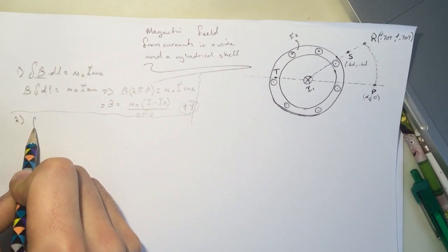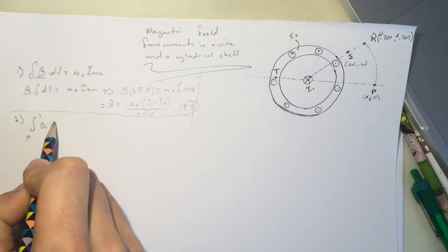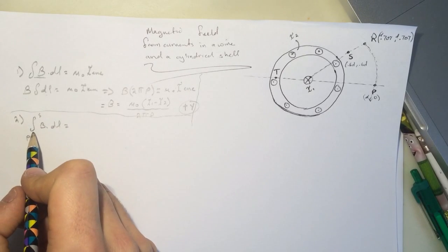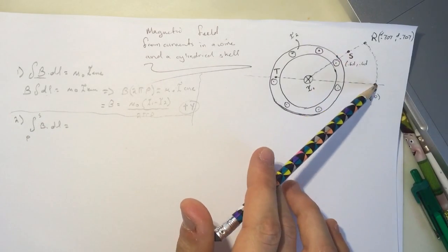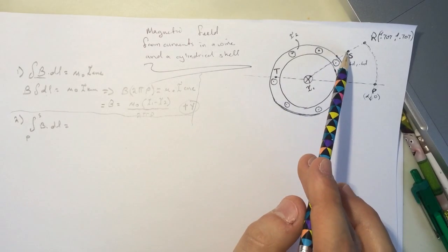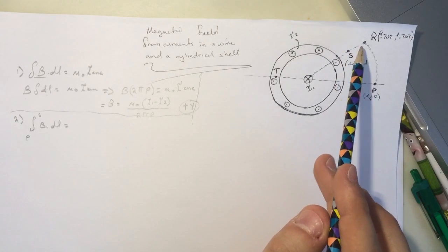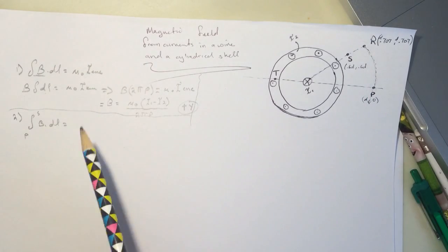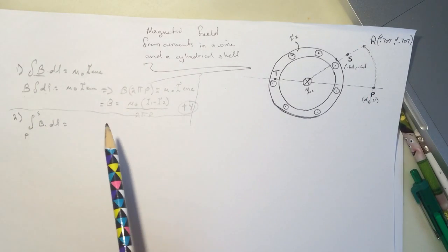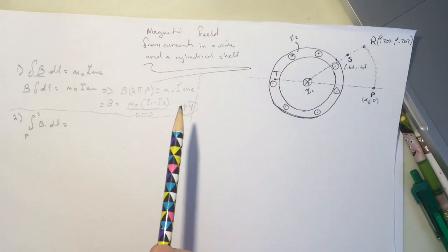What is the integral from S to P, B dot DL? They want this integral from point S to point P. So if you look at it from, let's take the path from S to R. This will be zero. Why? Because the magnetic field will be pointing perpendicular to the path, and if it was perpendicular, then the dot product will be cosine of pi over 2. That's why we neglect this path here.